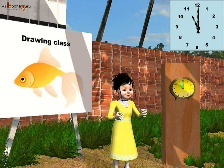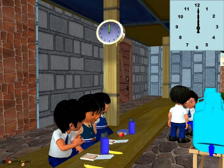Sona loves to draw. The long hand is at 12 and the short hand is at 11, so it is 11 o'clock — Sona's favorite drawing time in school. And what time did lunch start? The long hand is at 12 and the hour hand is also at 12 — just behind the long hand. So it is 12 o'clock, the lunch time for Sona with her friends.